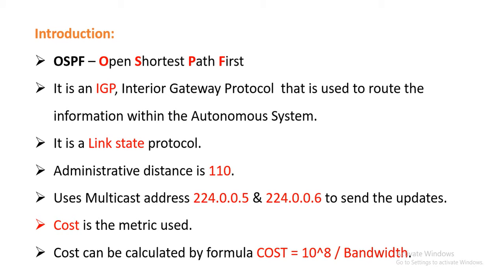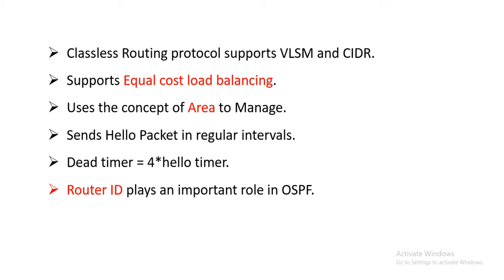Cost is the metric used in OSPF and the cost can be calculated by the formula: 10 to the power of 8 divided by the bandwidth of the interface used for communication. OSPF is a classless routing protocol that supports VLSM and CIDR. It supports only equal cost load balancing — unlike EIGRP which supports unequal cost load balancing, OSPF supports load balancing only when the cost is equal.